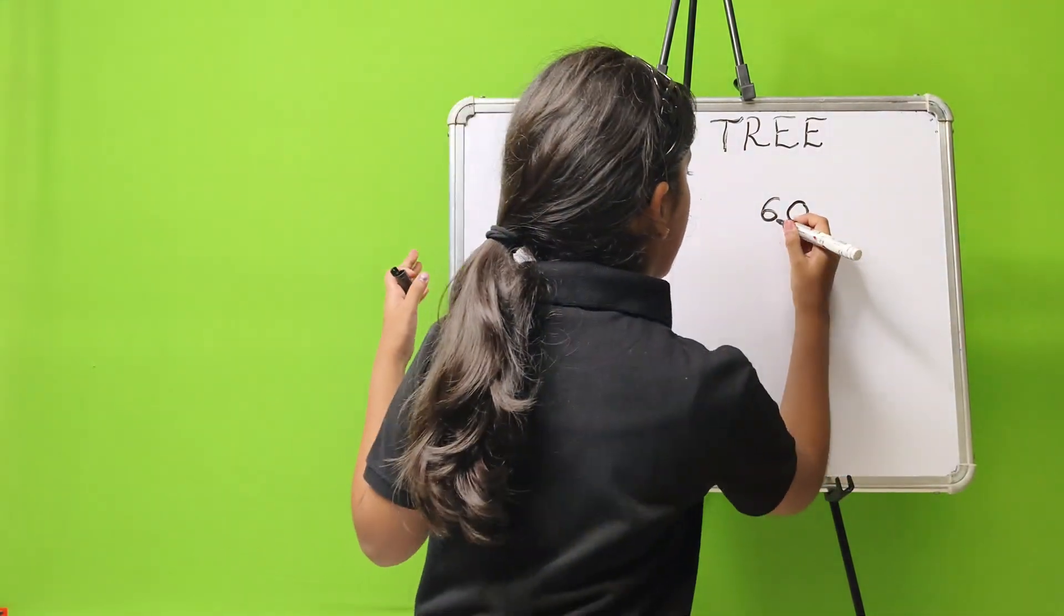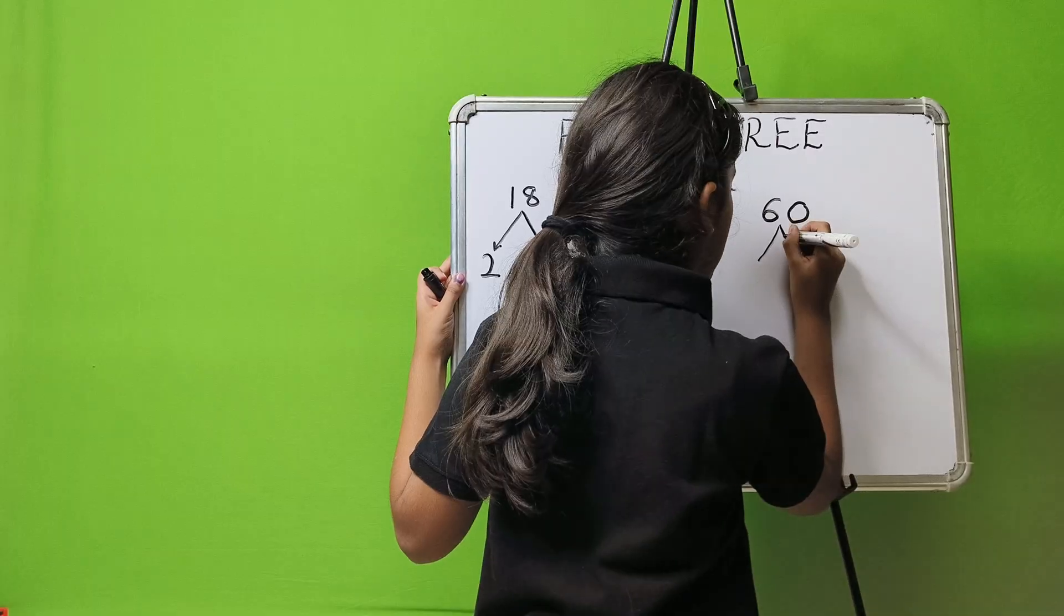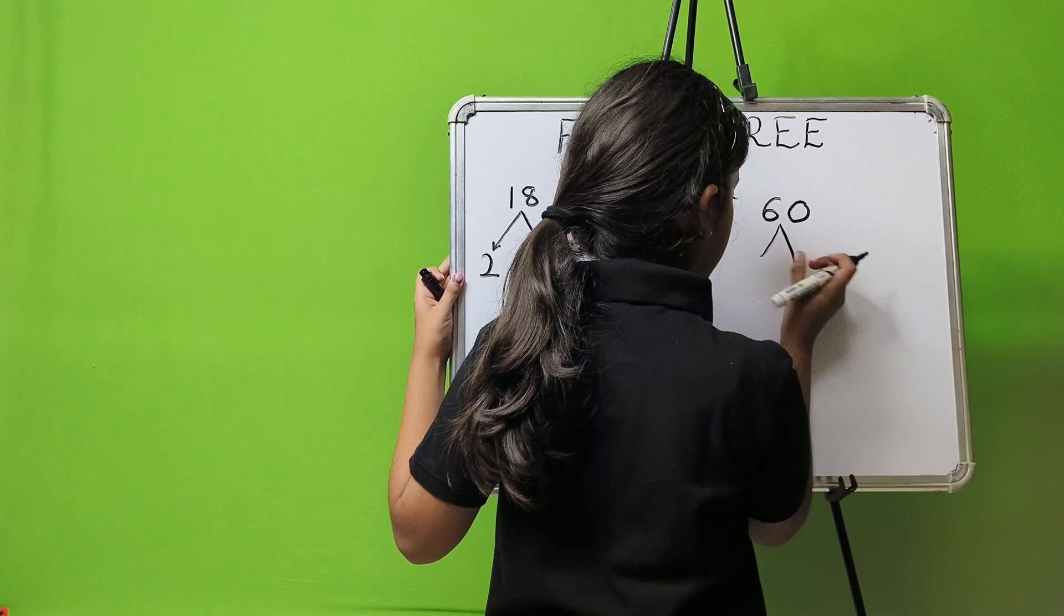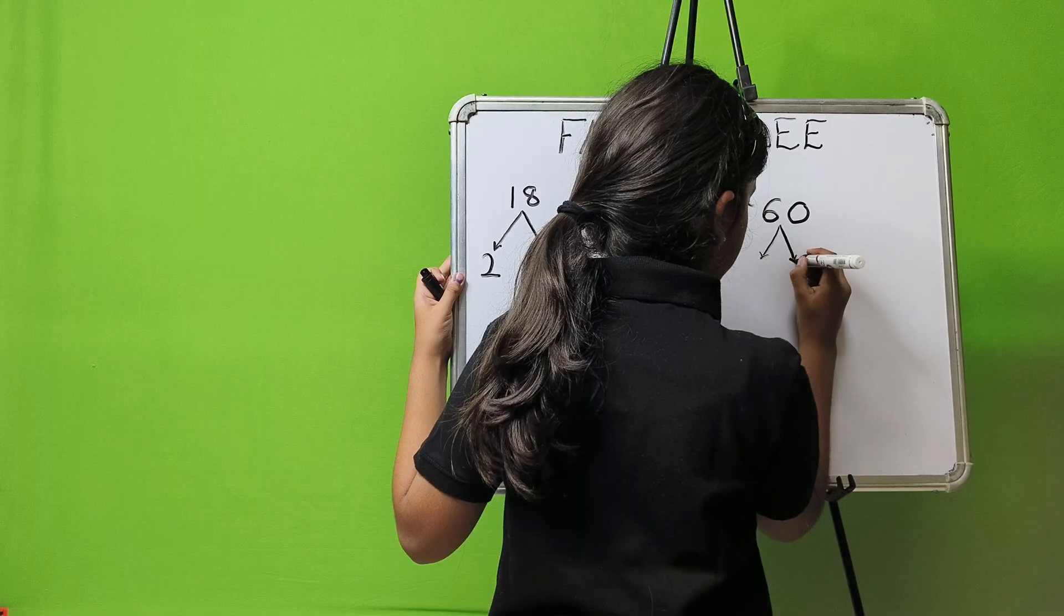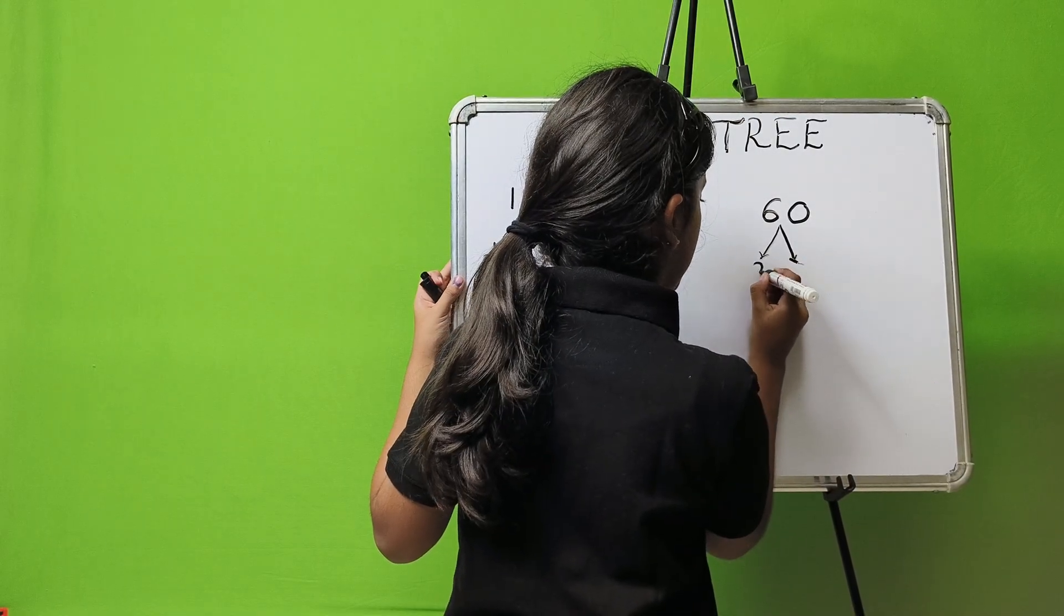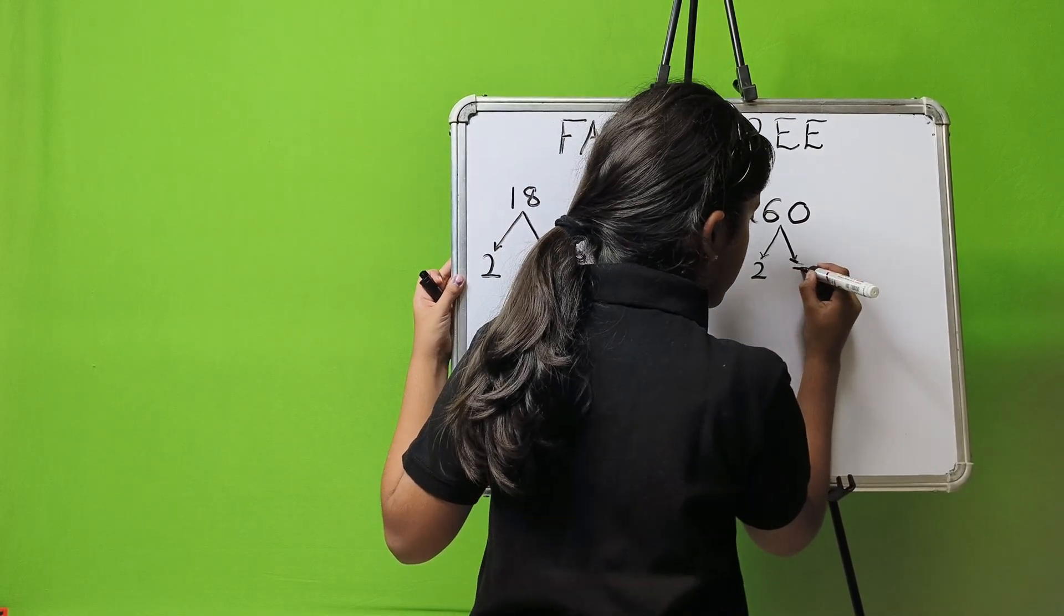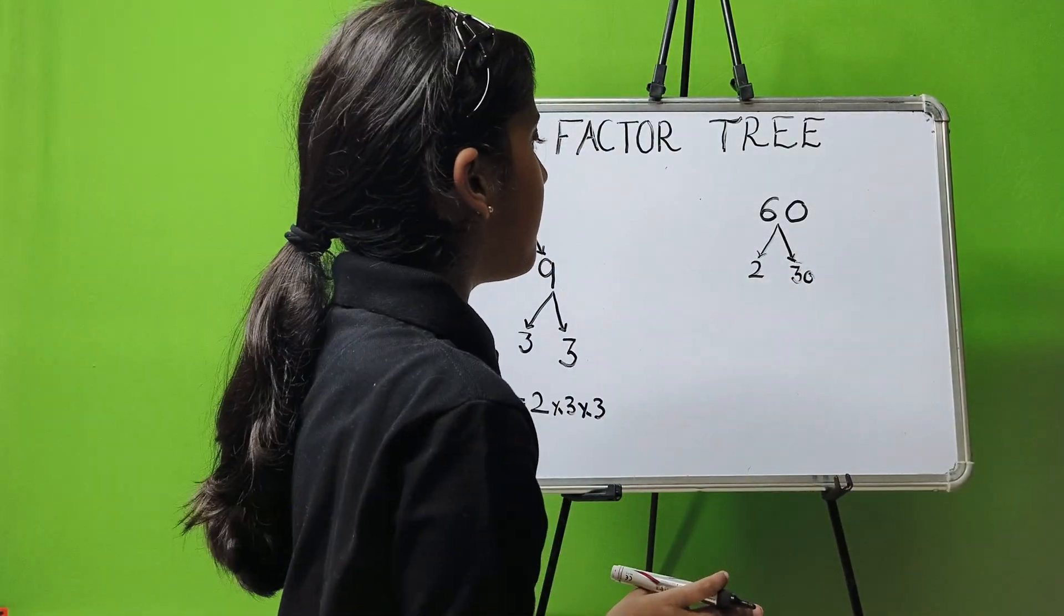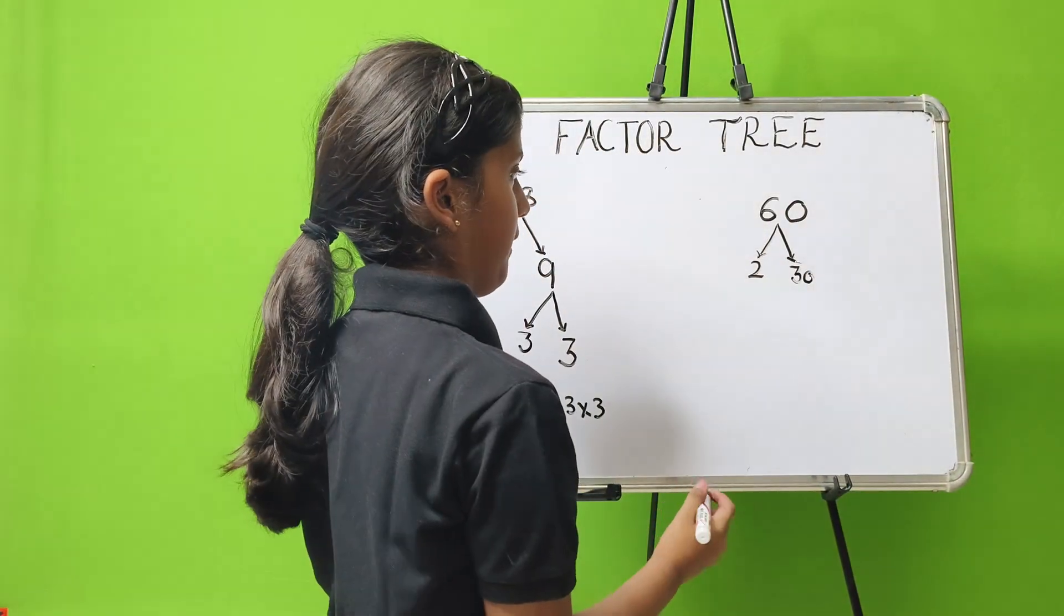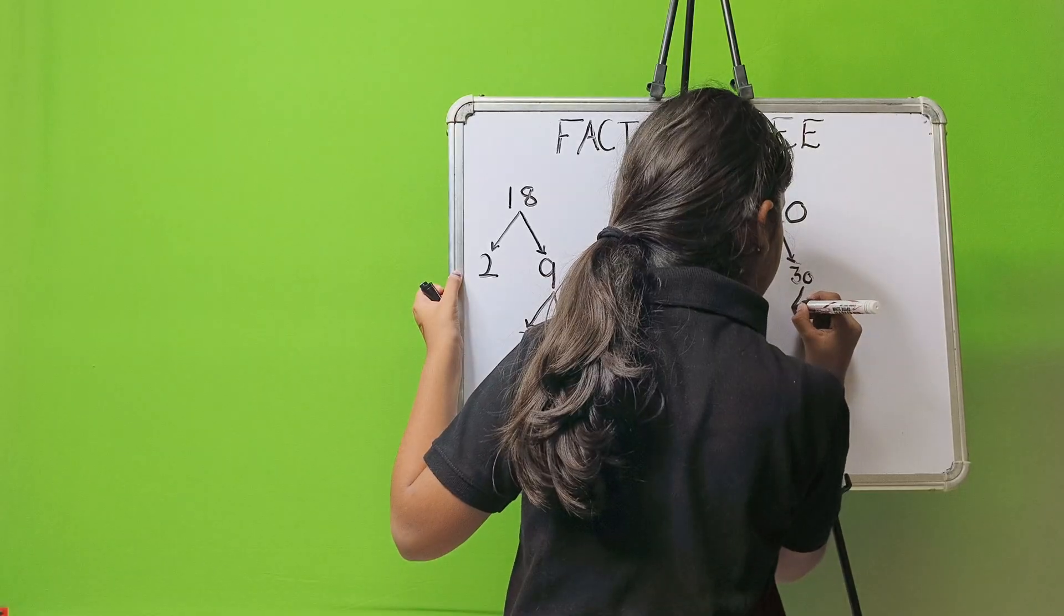Here also I am making 2 parts. And I am writing here 2 and 30. Now, 2 is a prime number and 30 is a composite number. So I am breaking 30, not 2.